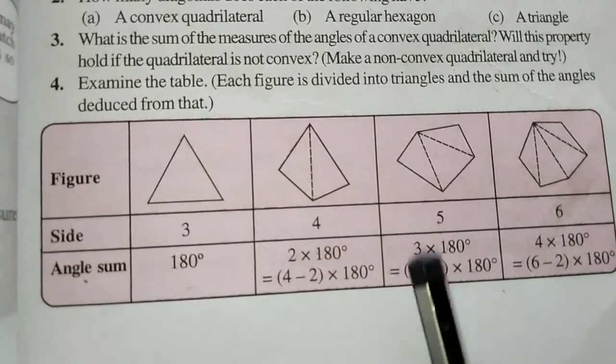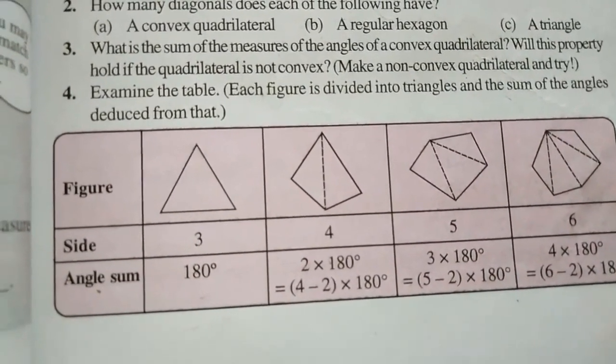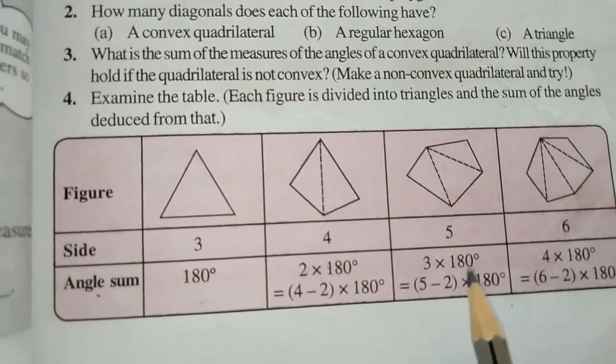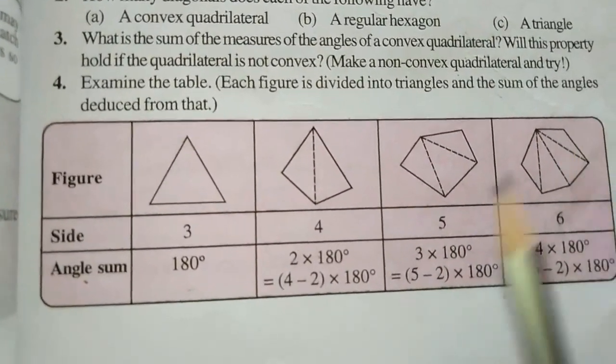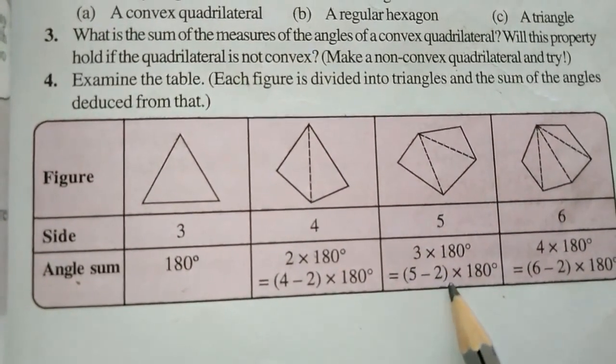Next, 5 sides. How do you do that? 5 sides — 2 lines drawn inside, making 3 triangles. So the angle sum is 3 into 180.